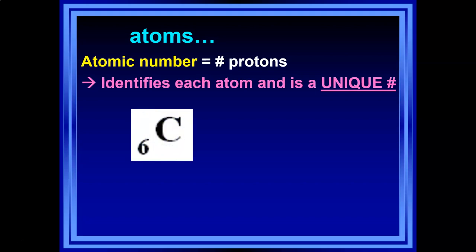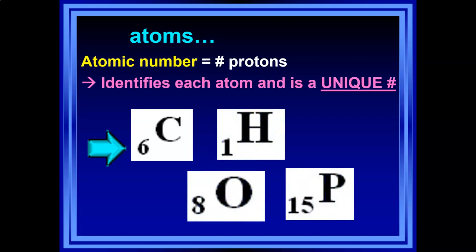Here we have carbon. The subscript number in front of the atomic symbol indicates atomic number — so this tells us that carbon has six protons. A few other examples: H, hydrogen, has one proton; the atomic number for oxygen is eight; and the atomic number for phosphorus is fifteen. We're not memorizing these numbers — we're just recognizing that the number in that location tells you how many protons.